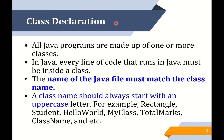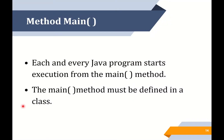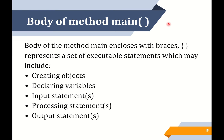Let's move to the next component of Java program which is class declaration. All Java programs are made up of one or more classes. In Java, every line of code that runs must be inside a class. The name of the Java file must match the class name. A class name should always start with an uppercase letter. Next, main method — each and every Java program starts execution from the main method. The main method must be defined in a class. The last component is the body of method main.